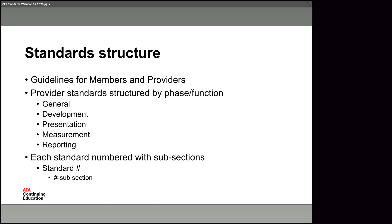The standards document also includes guidelines to our members about what continuing education is supposed to be about — things like when they can self-report and what the expectations are for members in terms of the education they receive. We included that so you as providers know what our members are required to do as part of their continuing education. It is a two-part system: providers deliver the education, and the people in the classroom receive it. The bulk of the document, though, is focused on the standards you need to be concerned with, broken down by phase or function within the CES provider network.